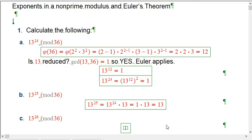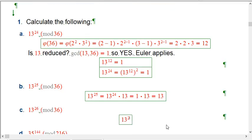Now 13 to the 26th, that's not quite as simple. Sometimes you really have to do some actual arithmetic and can't just use the theorems to make everything simple, but we've already got 13 to the 25th, which is 13. So it's going to be 13 to the 25th times one more factor of 13.